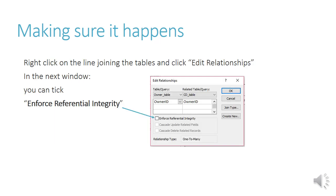If you right-click on the line joining the tables and then click Edit Relationships, in the next window you can tick Enforce Referential Integrity. That will make sure if anybody tries to delete a record that is being referred to in another table, you just will not be able to do it. And that's the end of our normalization PowerPoints. Bye-bye.